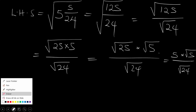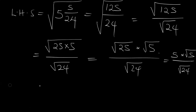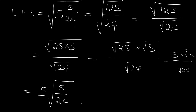Applying that rule, you now have the square root of 25 times the square root of 5 all over the square root of 24. The square root of 25 is 5, so this becomes 5 times the square root of 5 all over 24. This is equal to the right-hand side, which proves that the left-hand side equals the right-hand side.